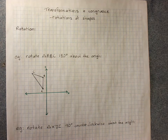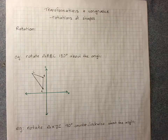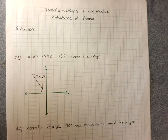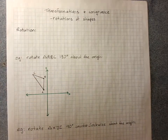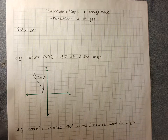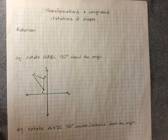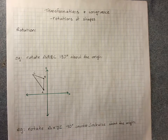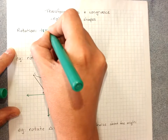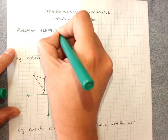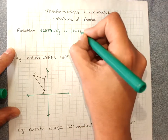Transformations and congruence: rotations of shapes. Rotating a shape is our last transformation, and it's as if you put a pin at a particular point — not necessarily in the shape, although it can be — and as if the shape was attached to that pin, and we're rotating it around that pin. So rotation is turning a shape around a point in a direction.